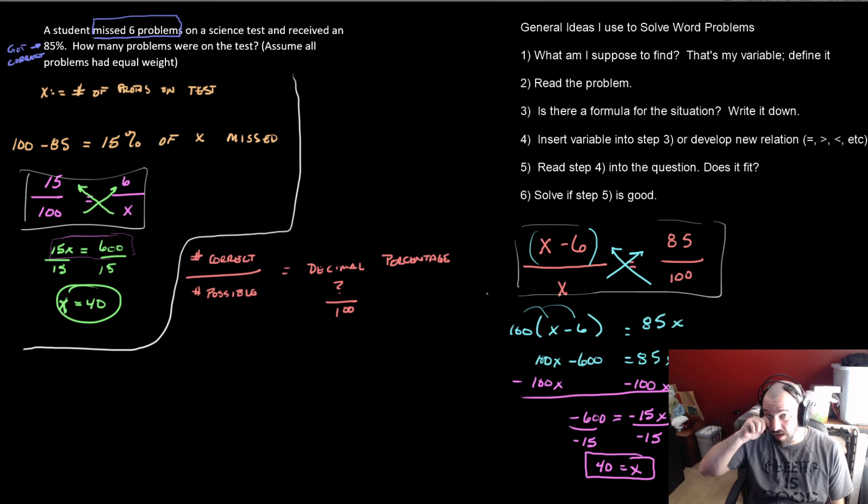So see, you get the same answer either way. It doesn't really matter. But once you're done, you say, oh, well, X is 40. Well, what is X? I defined it. That's how I know I'm done. It asks for how many problems are on the test. I defined my variable X to be the number of problems on the test. That way, when I find X, it's over. I don't have to plug that back in and look for other things. You can test it, however.